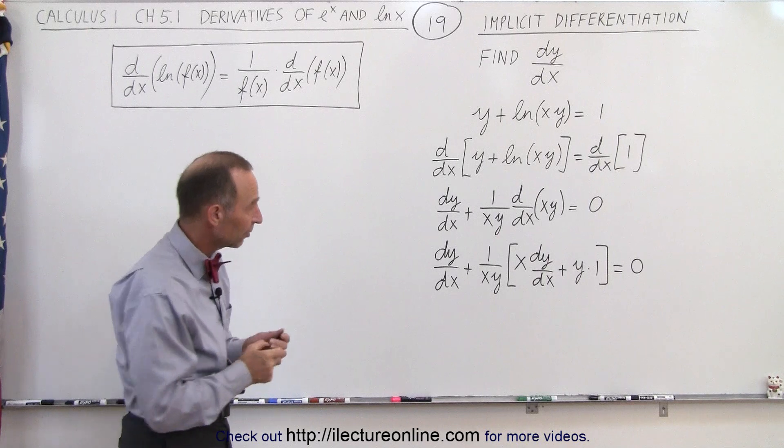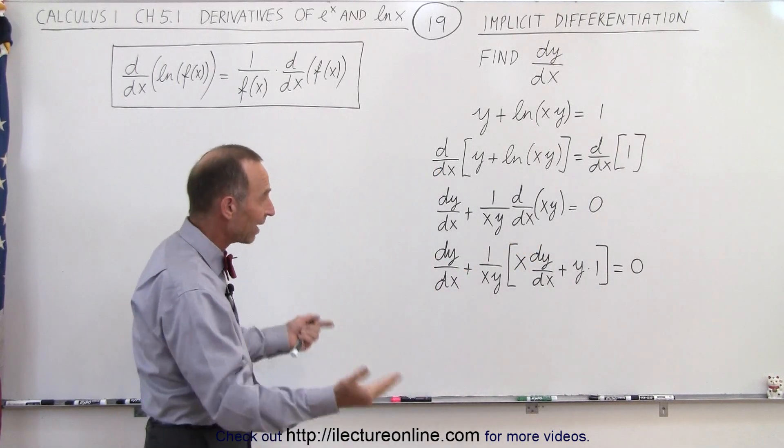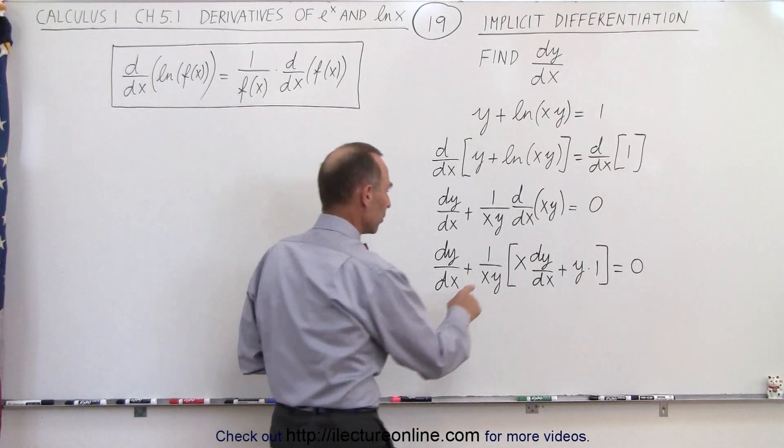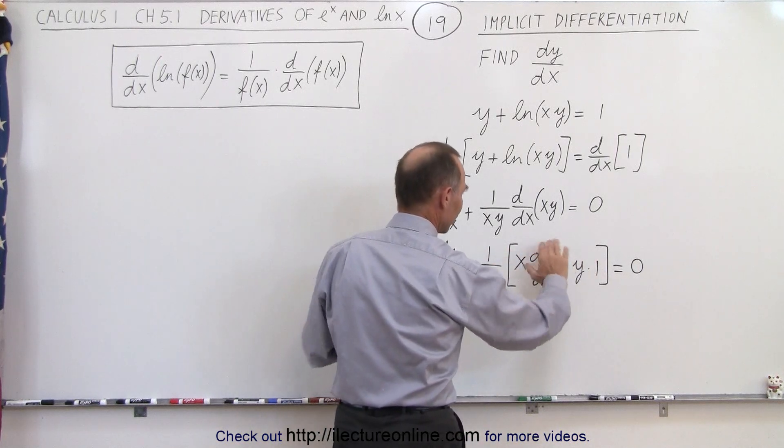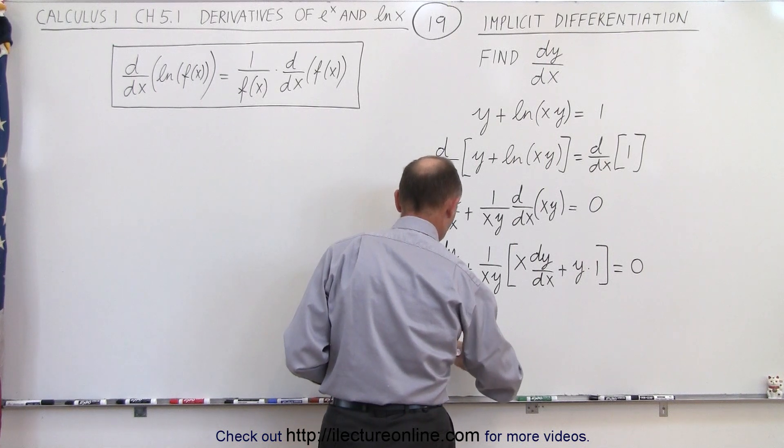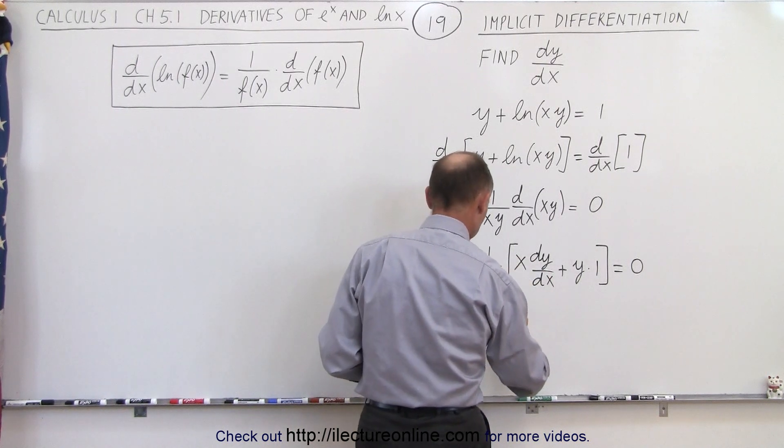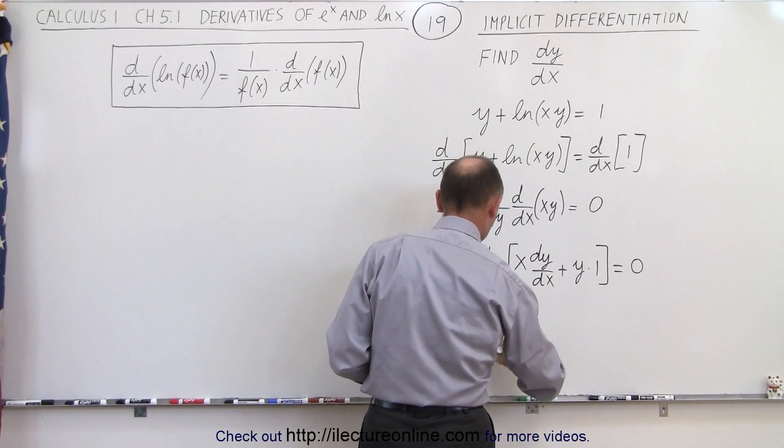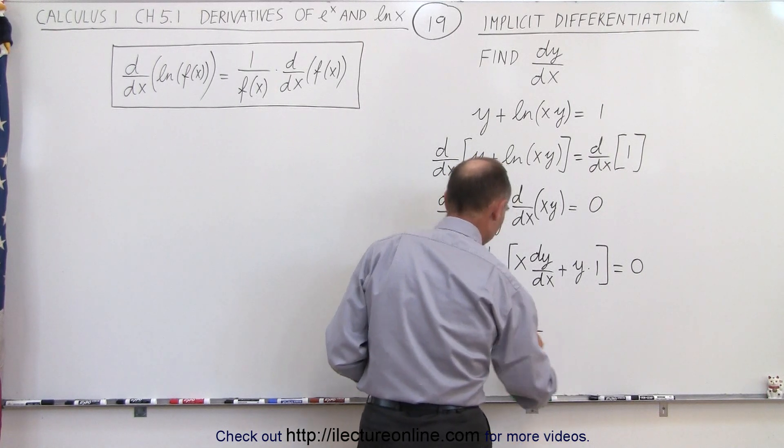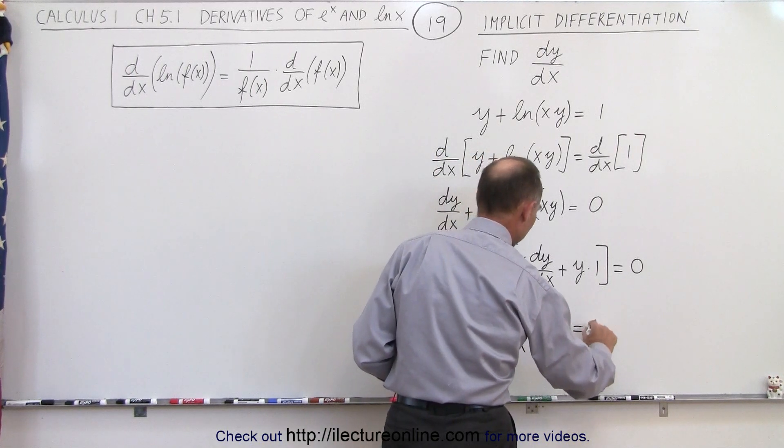So now notice we have two places here and there where dy/dx appears. We now have to isolate that and move everything else over to the other side. So first what we need to do is multiply this times this to get rid of the brackets. So we have dy/dx plus 1 over xy times x dy/dx, so the x's cancel out, so we end up with 1 over y times dy/dx. Plus, and here the y's will cancel out, so we end up with 1 over x, and that is equal to 0.